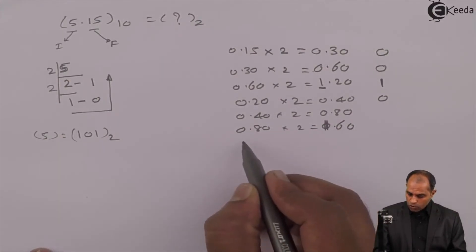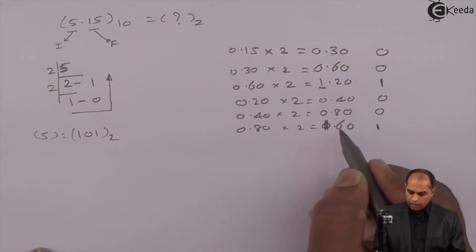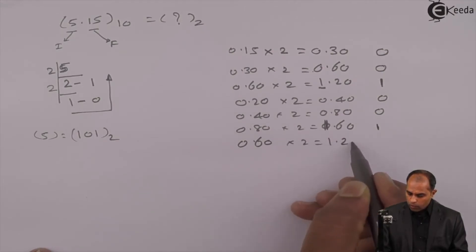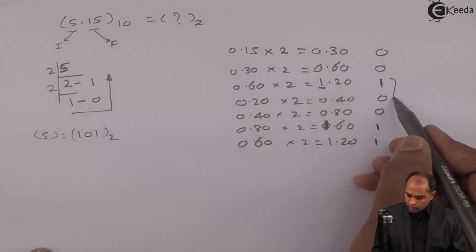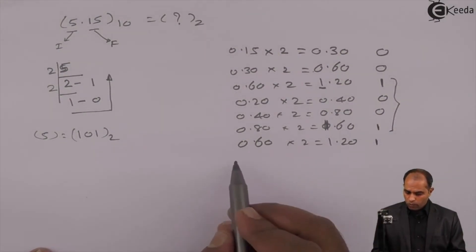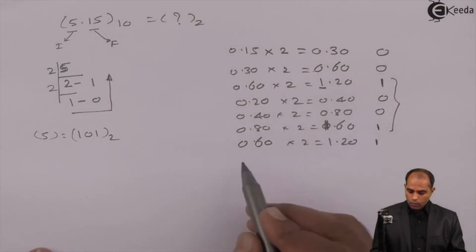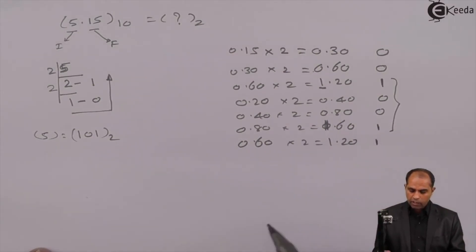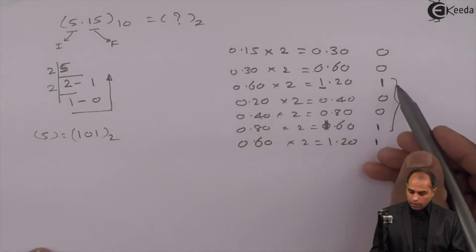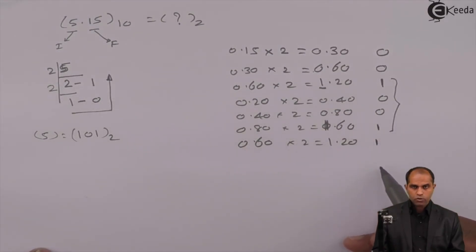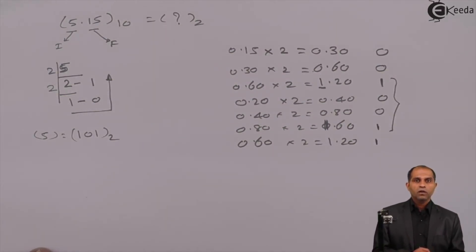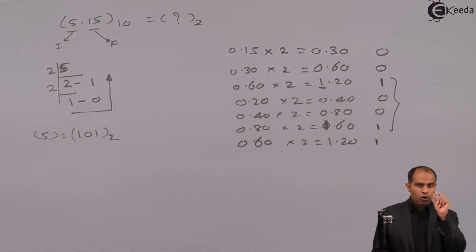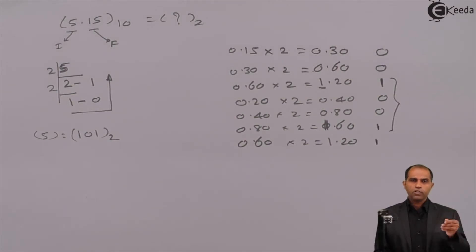Continuing: 0.80 times 2 equals 1.60 — integer part is 1. Then 0.60 times 2 equals 1.20 — integer part is 1. Do you notice that the numbers are recurring? 0.20 times 2 is 0.40, 0.40 times 2 is 0.80, 0.80 times 2 is 1.60 — the numbers keep recurring. So the fractional binary digits are 0, 0, 1, 0, 0, 1 and so on. We take around 5 to 6 digits to approximate to the nearest value.